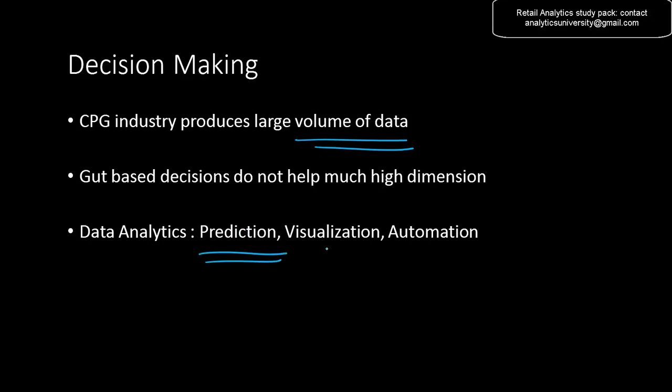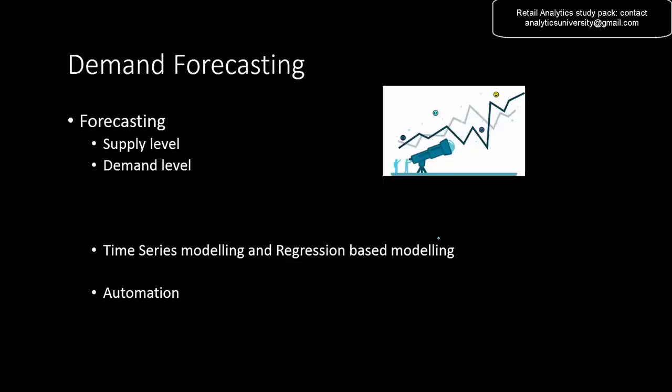We can use the data for prediction, visualizing data for decision making, automating decision making, and so on. The problem is that gut-based decision making doesn't quite work in the CPG and FMCG industry because the volume of data is just huge. High dimensional decision making is extremely difficult for human beings, so only machines can make better decisions.